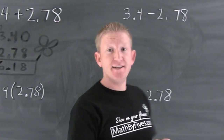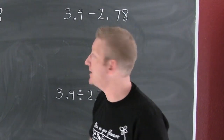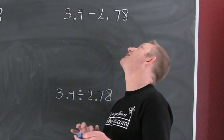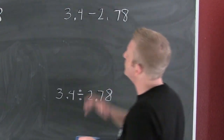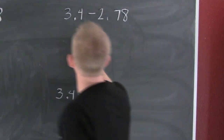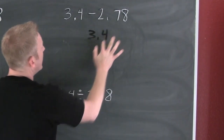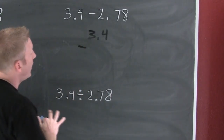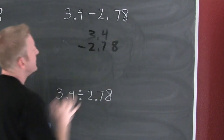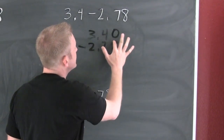But what if I need to subtract them? The most important part about adding and subtracting decimals is lining up that decimal place. I'm going to put the big one on top — just in case I have to borrow. So I'm going to take that 3.4 and subtract off that 2.78. Here again we're going to fill in that place.